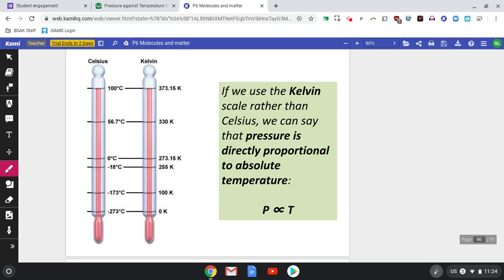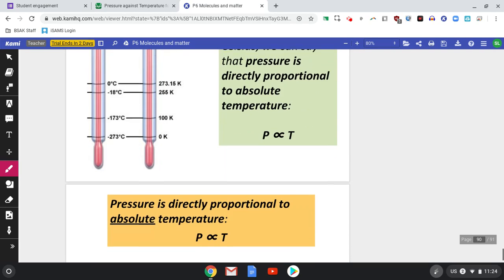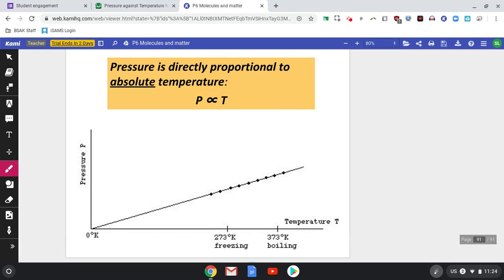So there you have it, the Kelvin scale, much more useful mathematically to scientists because if we plot pressure against absolute temperature we get this graph where it goes through the origin. Looks exactly the same graph that you plotted except this y-axis is way over here at the start point.